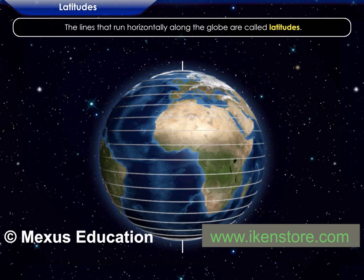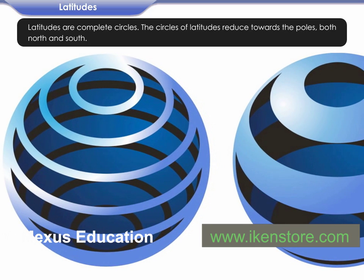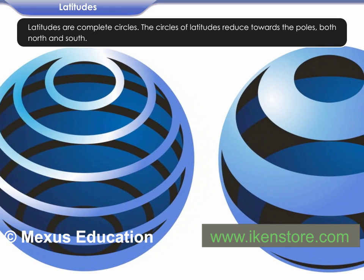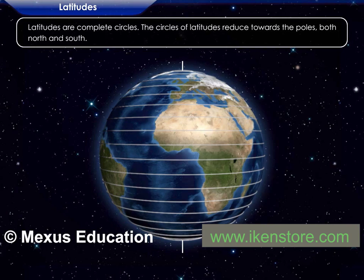The lines that run horizontally along the globe are called latitudes. Latitudes are complete circles. The circles of latitudes reduce towards the poles, both North and South.